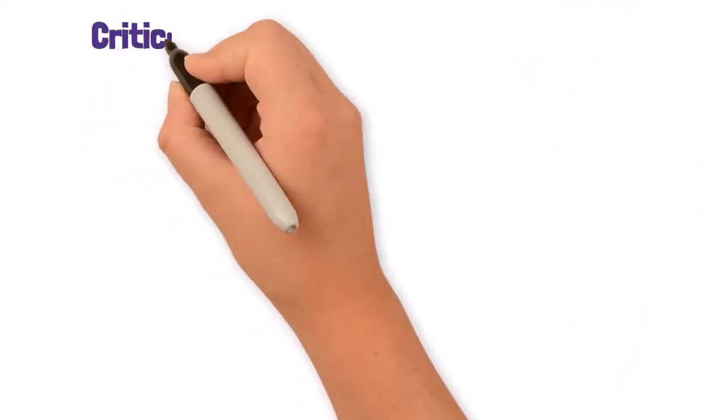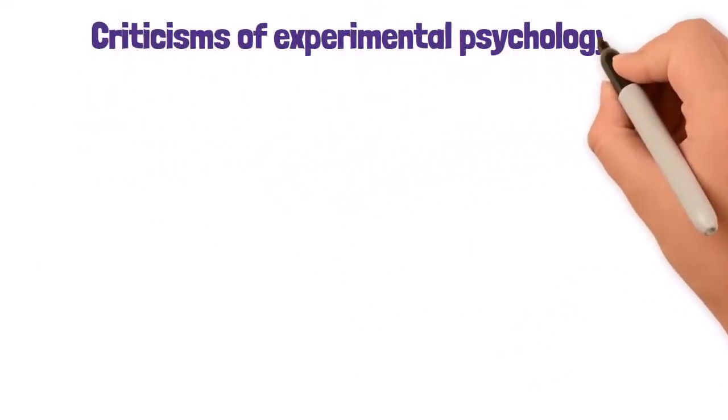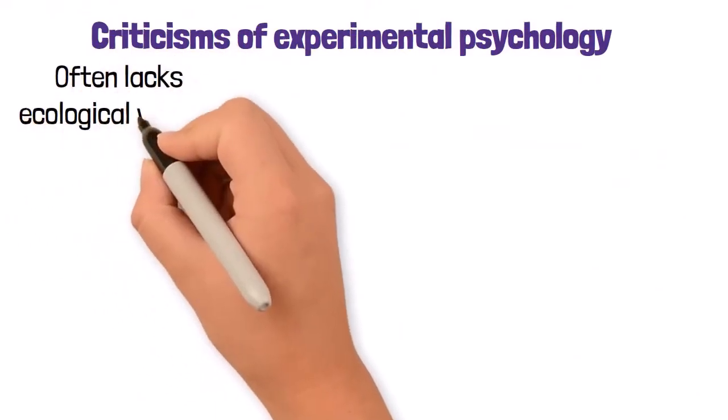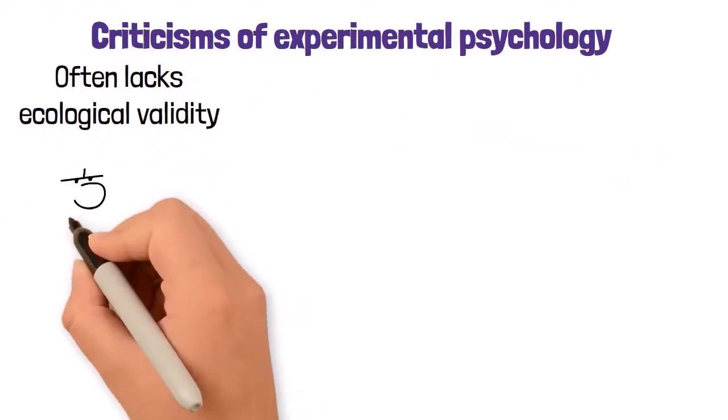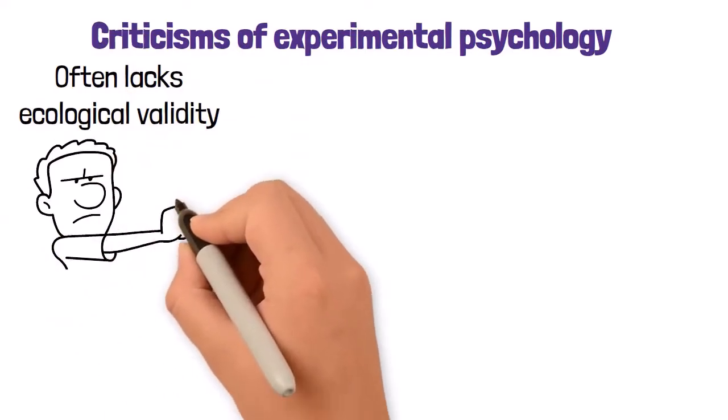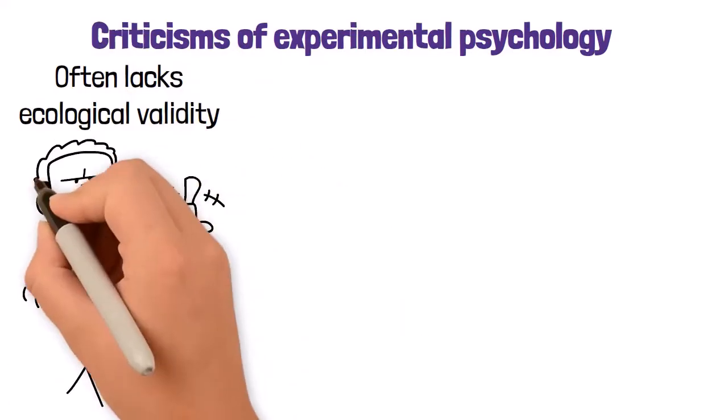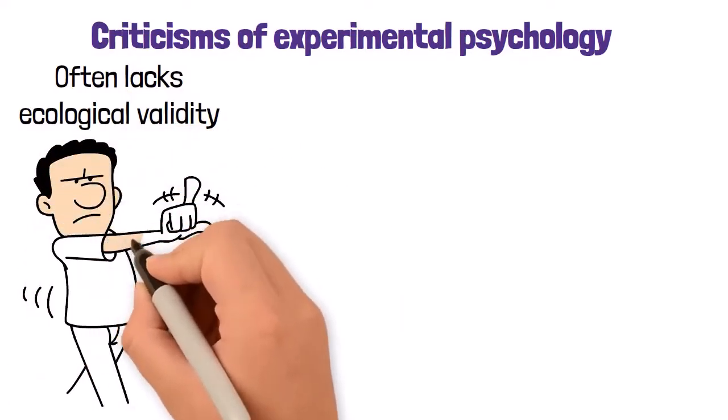Now let's explore three criticisms of experimental psychology. Firstly, it often lacks ecological validity. Experiments conducted in controlled settings may not accurately reflect real-world situations, limiting the generalizability of findings to everyday life.